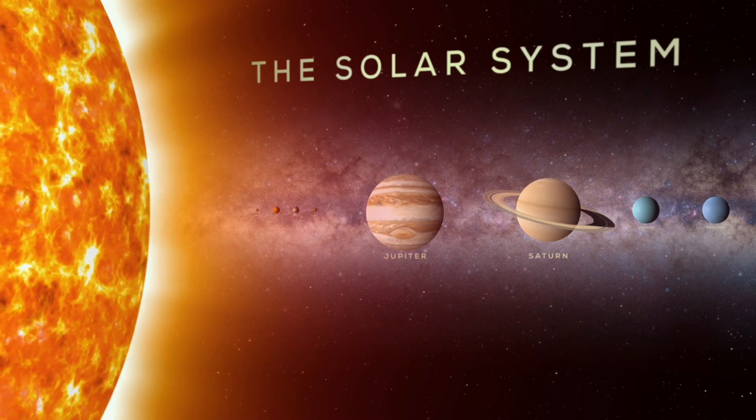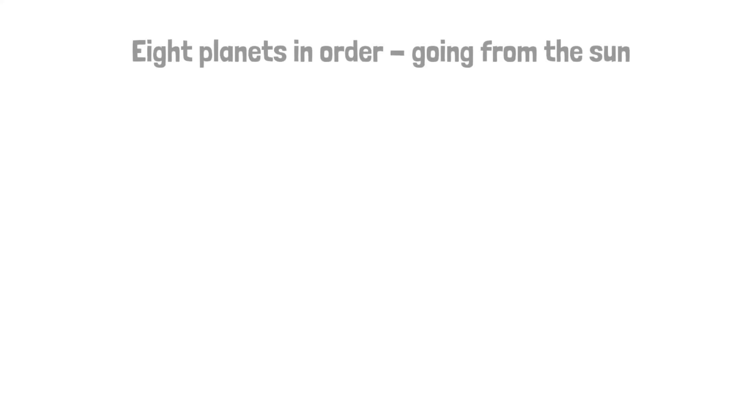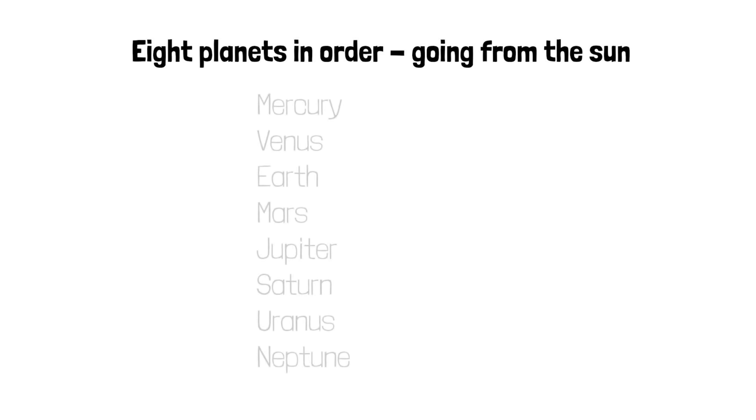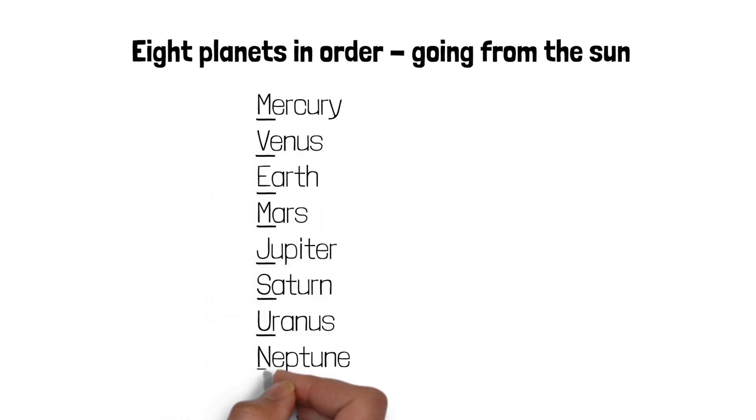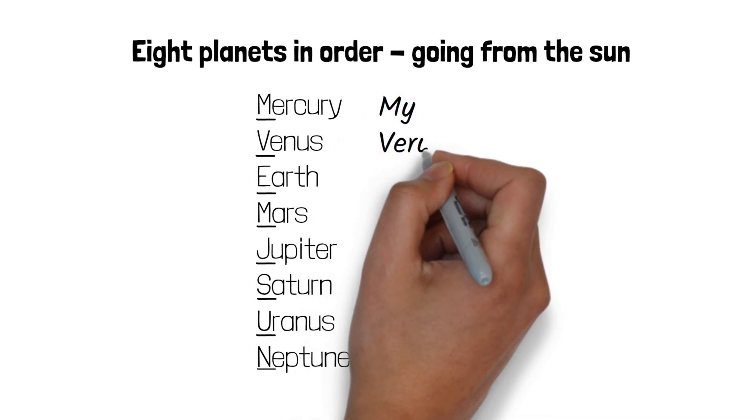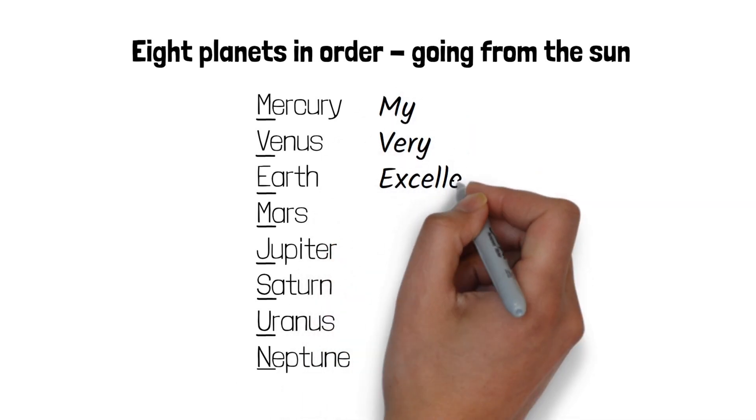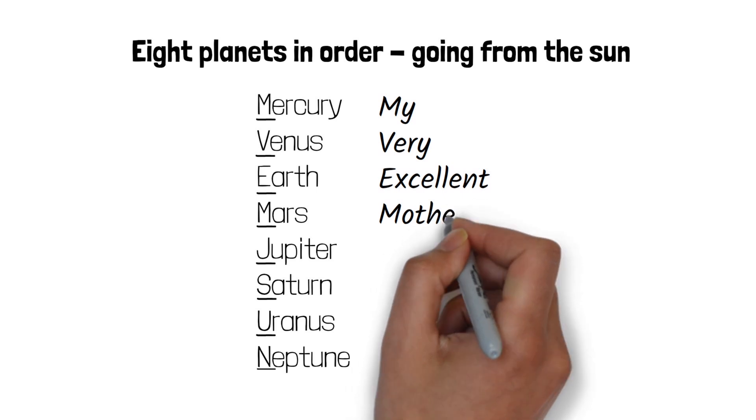To help you to remember the order of the eight planets we can use a mnemonic. Here is quite a simple one. First we take the first letter of each of the planets: Mercury, Venus, Earth, Mars, Jupiter, Saturn, Uranus and Neptune and we use a mnemonic such as 'my very excellent mother just served up noodles.'